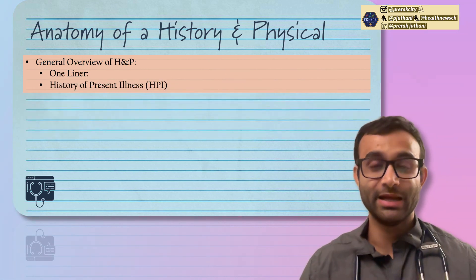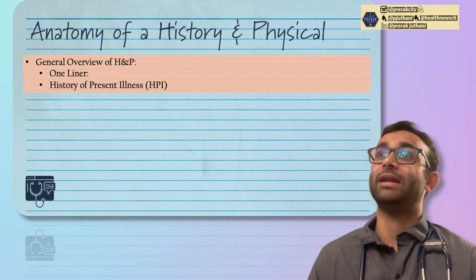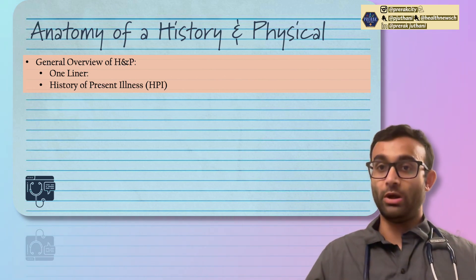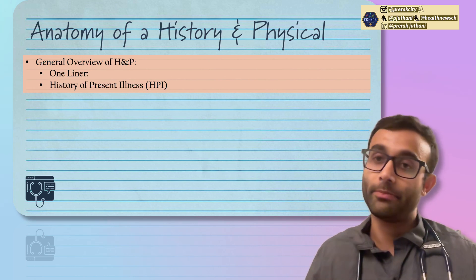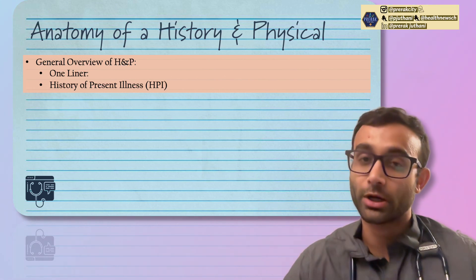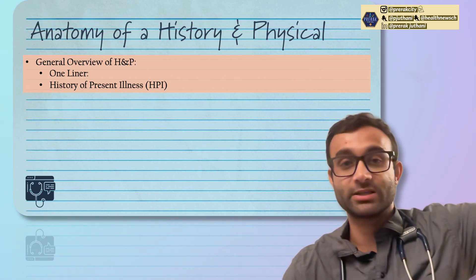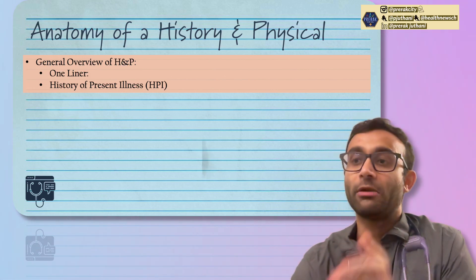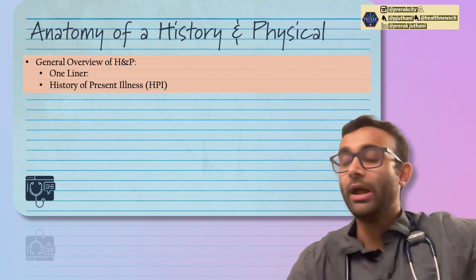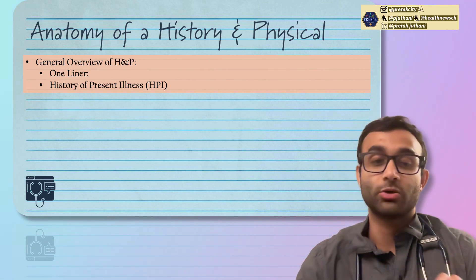The next part of an H&P is the history of present illness — how did the patient get to where they are? No one wants to end up in the emergency department at 10 p.m. on a Saturday, and yet tons of people do. Each of them has their unique story of why they end up there, so learn about it. What happened 10 weeks ago, five weeks ago, three weeks ago? What happened this morning, and why did you come in now and not three weeks ago? They will give you really good answers.